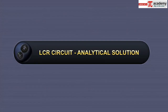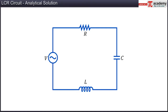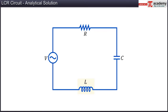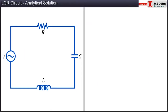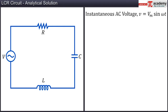In this module, you will learn about the analytical solution of a LCR circuit. Consider a circuit comprising of a resistor of resistance R, a capacitor of capacitance C, and an inductor of inductance L connected in series to an AC source, which applies a voltage V equal to Vm sin omega T at any instant of time T.